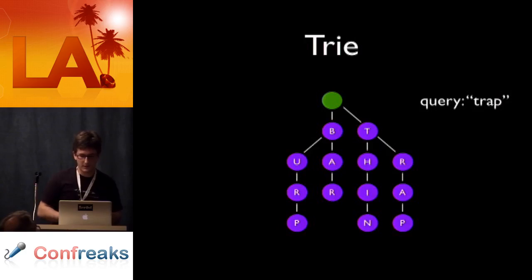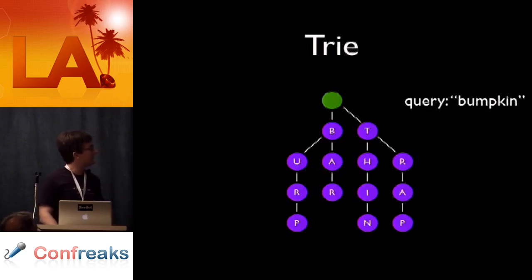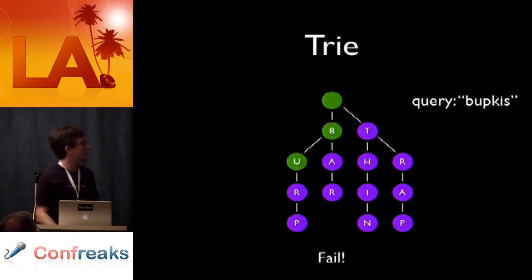So how does a query work? Well, let's say we're going to query for 'trap.' Start at the root node, we walk down each letter at a time, T, R, A, P. And success. We found trap. And let's say we're going to do a false query, something that's not in there. It's going to look like this. You're going to start at the root node, B, U, and fail. So it stops there. Basically, the P in 'bupkis' isn't there. So that's as far as we go. And we know that it's not in the trie at all.